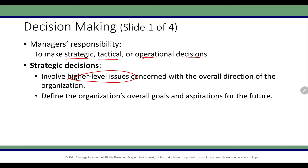Strategic decisions address higher-level issues and the overall direction of the organization — the overall goals and aspirations of what they want to achieve. At this level, higher-level management doesn't care about very small details; they draw the big picture of where they want to be next year. These are generally annual decisions, though there are also longer-period strategic decisions like five-year and ten-year goals.